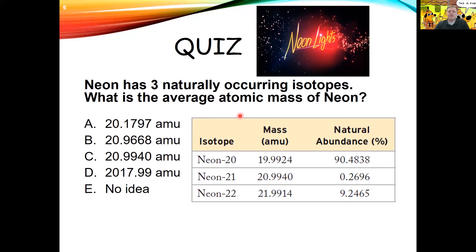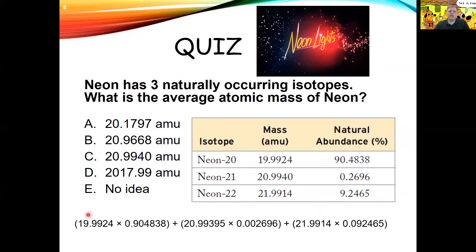Neon has three naturally occurring isotopes: neon-20, neon-21, and neon-22. The masses and natural abundances are given in a table. To calculate the average mass of neon, take the individual masses of each isotope multiplied by their natural abundances, and add it all up. The answer you should get is 20.1797 AMU. If you didn't get that, double check your math and write down that you missed this question so you can review it before the exam.